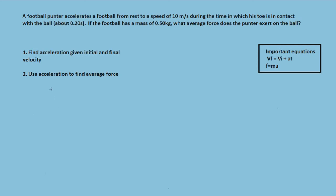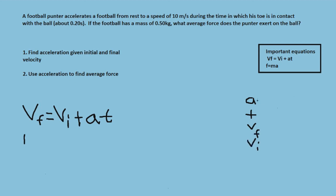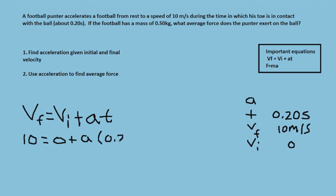Step one: find the acceleration using Vf = Vi + acceleration × time. From our table of variables, we want to find acceleration. Time in contact is 0.2 seconds, final velocity is 10 m/s, and initial velocity is 0 since it starts from rest. So: 10 = 0 + acceleration × 0.20, giving an acceleration of 10 ÷ 0.2 = 50 m/s².